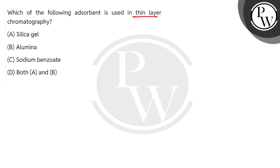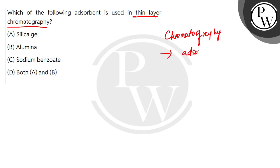Thin layer chromatography is a type of adsorption chromatography. Chromatography can be divided into many techniques and categorizations. If we are doing adsorption, different substances of a mixture are differently adsorbed on an adsorbent, so we call it adsorption chromatography.